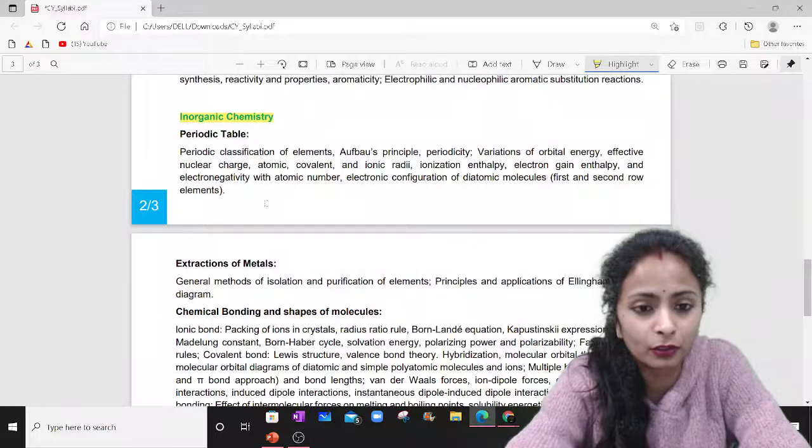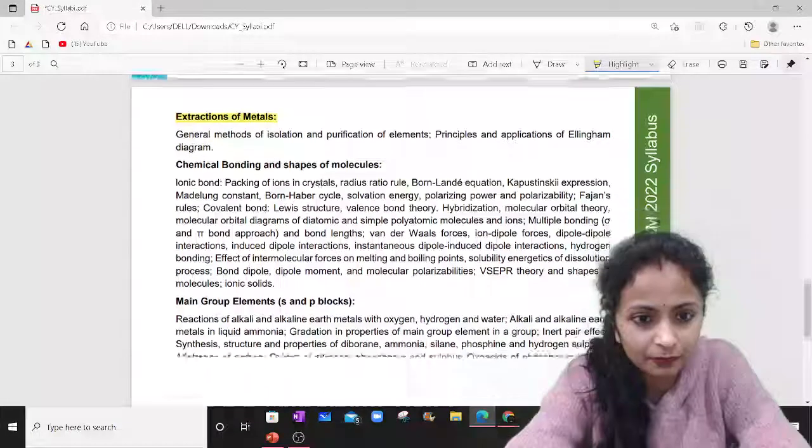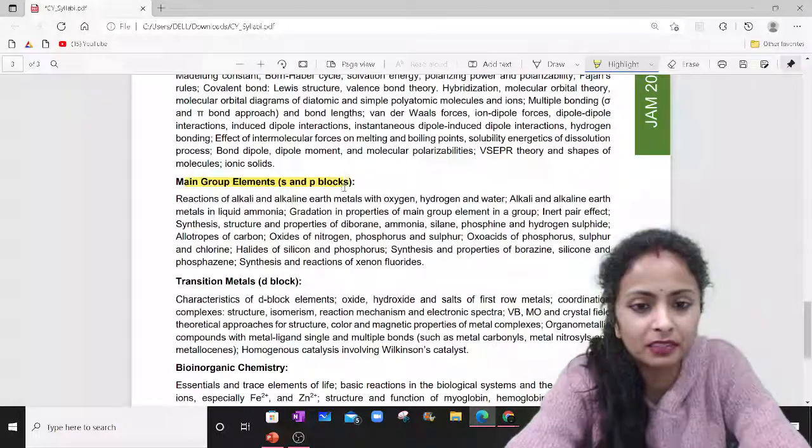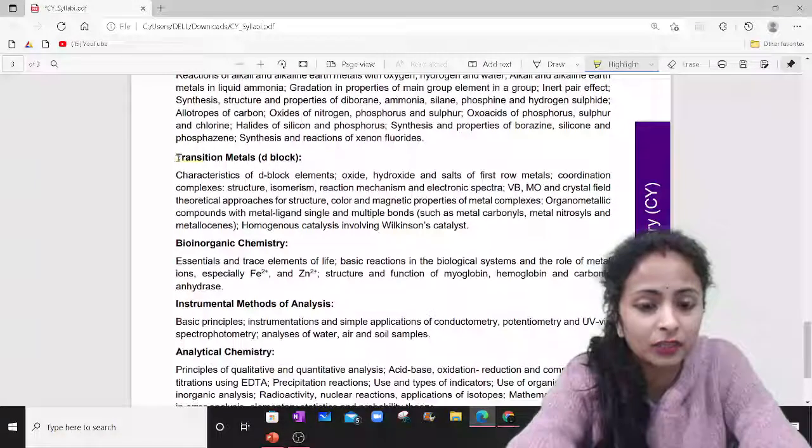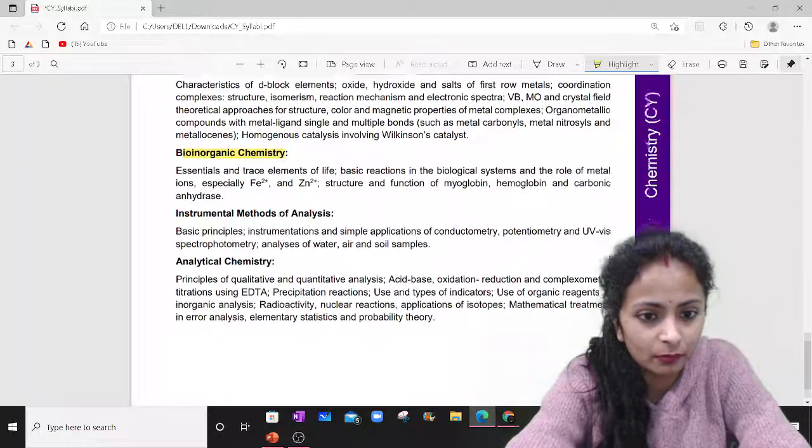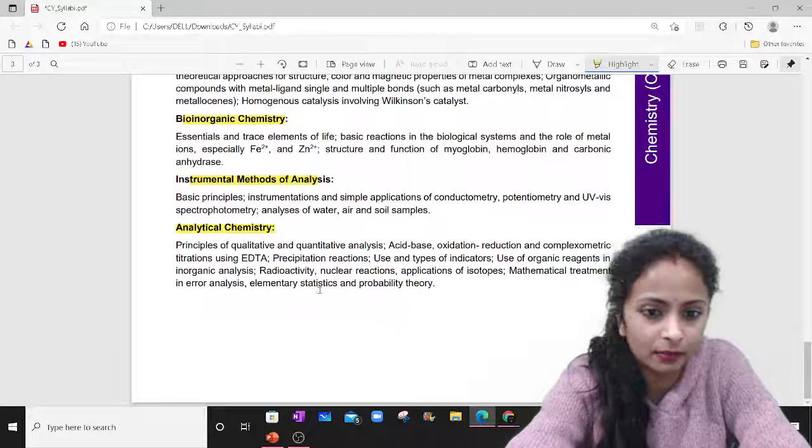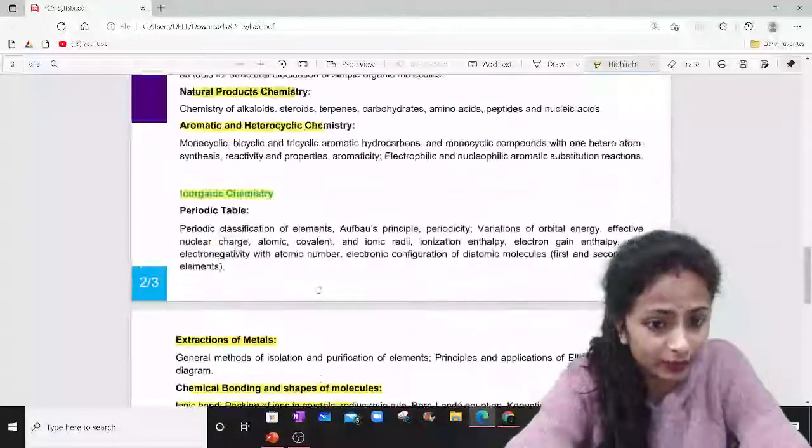For inorganic chemistry, the syllabus includes periodic table, extraction of metals, chemical bonding and shapes of molecules, main group elements (s and p blocks), transition metals (d block), bioinorganic chemistry, instrumental methods of analysis, and analytical chemistry. These are the total units.